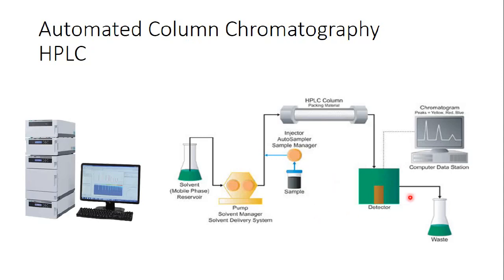When we detect the substances coming out of the column, we get results similar to this graph — we get different peaks. Every peak represents one chemical coming out of the column. The most non-polar substance will be the first peak, then the second, and then the polar substance will be the last. This is the time axis, and this one is the signal axis.